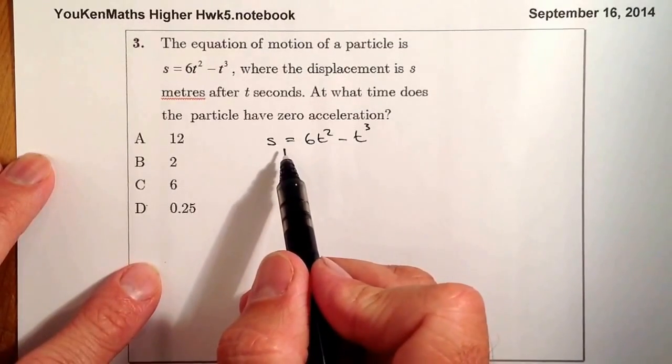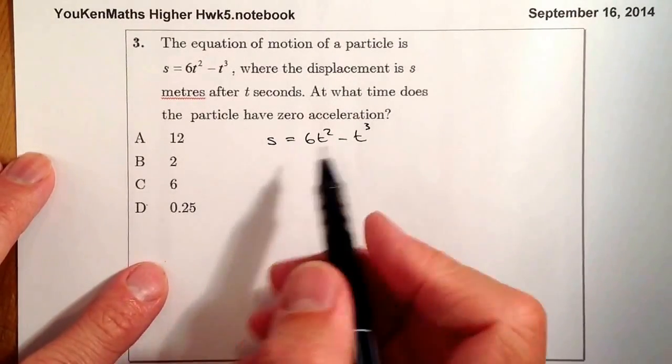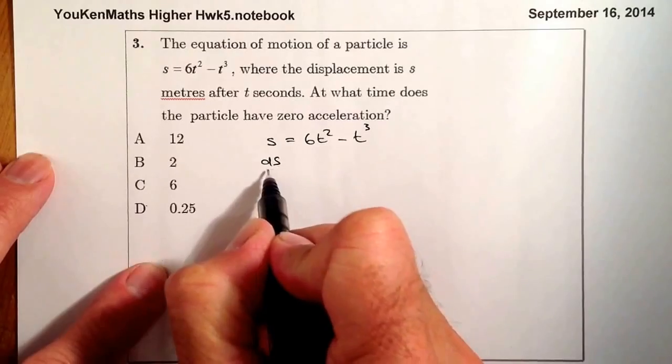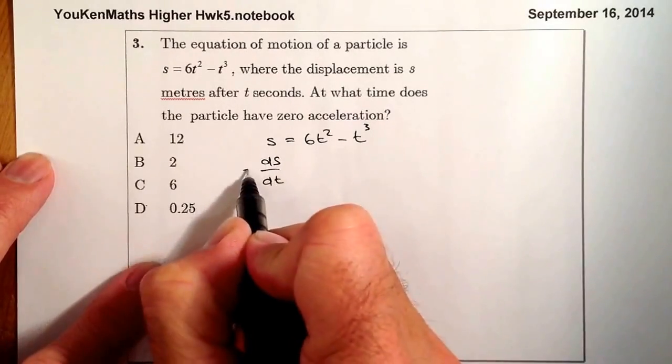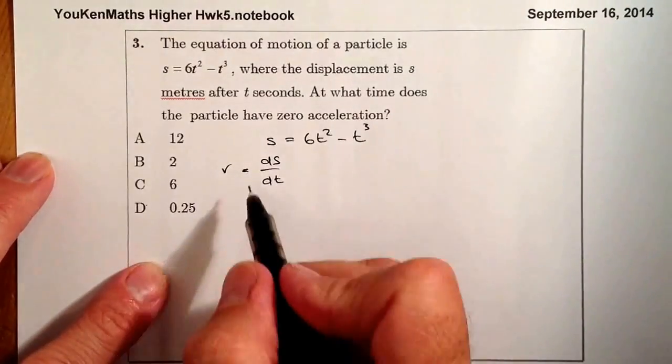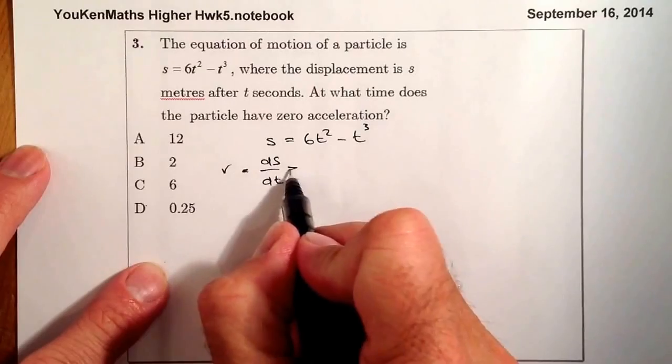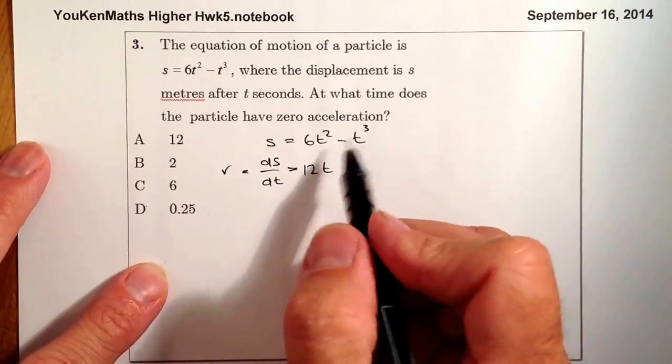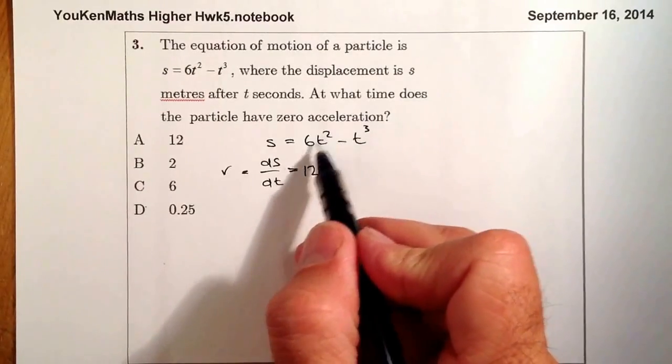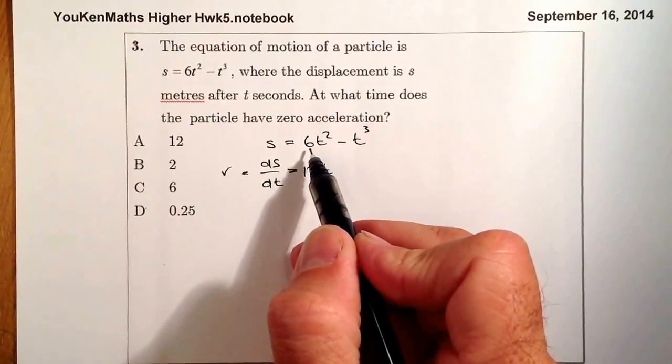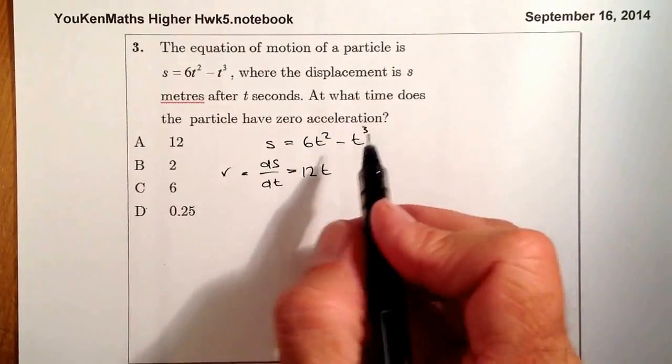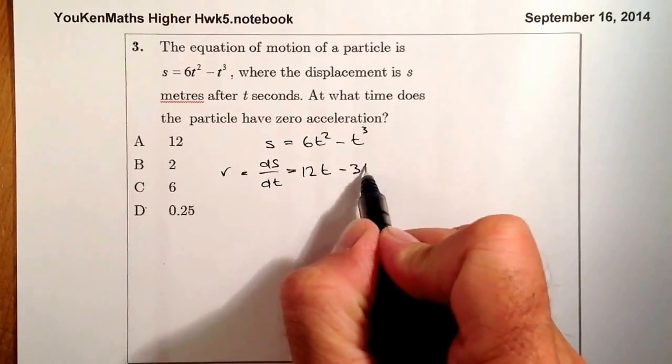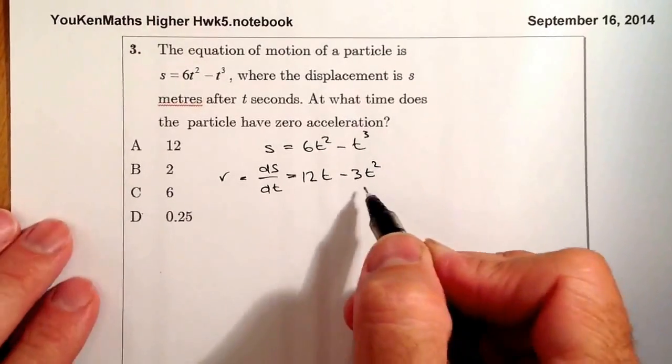If we differentiate that, we'll get a formula for the velocity. That will be ds by dt, or really, the velocity is going to be equal to ds by dt. I'm just going to differentiate this part here. That's going to give me 12t, multiplying the power by the number at the front and reducing the power by 1, and that'll give me minus 3t squared. So that's my formula for the velocity.